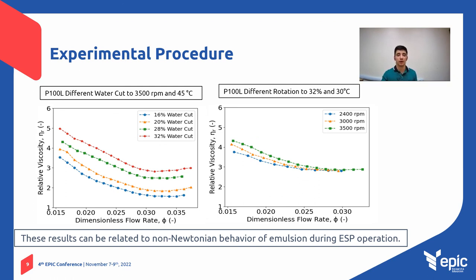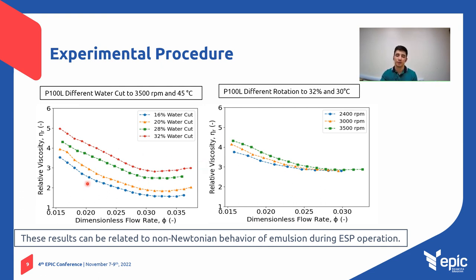Here, the influence of the dimensionless flow rate on the relative viscosity of the emulsion inside the ESP is shown. It is possible to notice that the relative viscosity increases as the dimensionless flow rate decreases for the analyzed water cuts. The ESP viscous performance degradation caused by emulsion can be intensified by effects such as shear-thinning behavior.